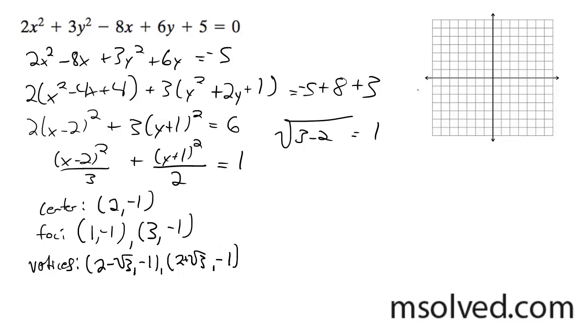Alright, so we're going to graph it. We've got the center at (2, -1), foci at (1, -1) and (3, -1). For the vertices, a little bit out here at 2 minus root 3 and 2 plus root 3. And for y it's root 2. So there we go, that's about it.